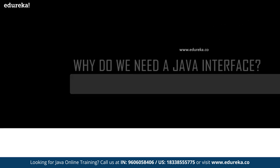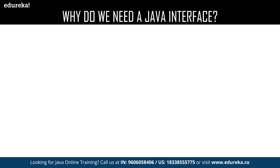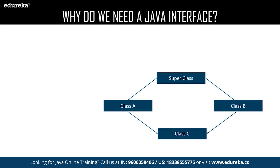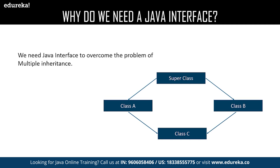Why do we need interface? We all know that Java supports inheritance, but when it comes to multiple inheritance, Java cannot support it. It ends up facing ambiguity between two pairing classes and fails to provide the required result. This particular problem is called the diamond problem. Here there is a super class which is inherited by two classes, class A and class B. Now we are trying to inherit the properties of class A and class B into a new class C, which practically seems impossible in Java.